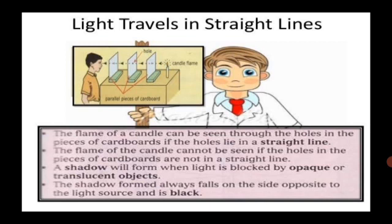A shadow will be formed when light is blocked by opaque or translucent objects. The shadow formed always falls on the side opposite to the light source and is black.